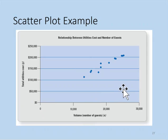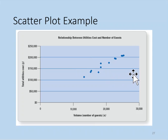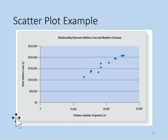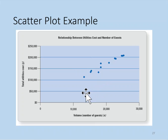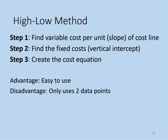Scatter plots are useful because they allow managers to identify outliers or abnormal data points. If a data point doesn't fall in the same general pattern as the others, a manager might spot a potential outlier and should first determine whether the data is correct — perhaps there was a clerical error. However, scatter plots are subjective; interpreting where the line crosses the y-axis and calculating the slope can vary depending on the individual performing the analysis.